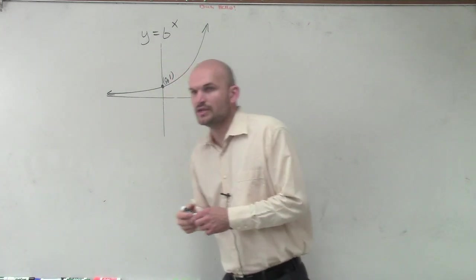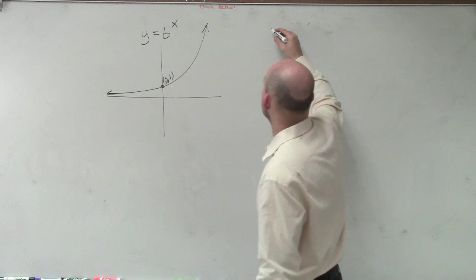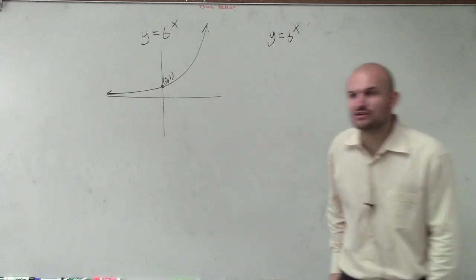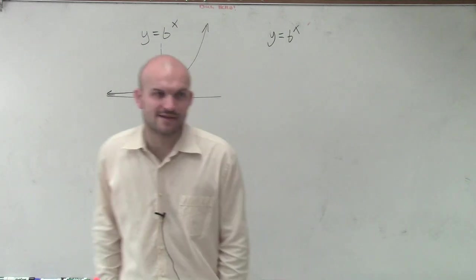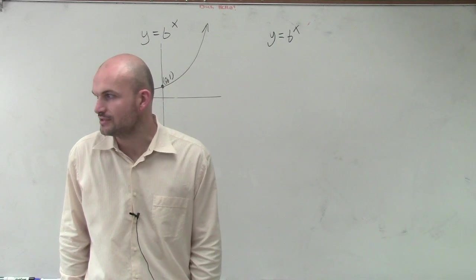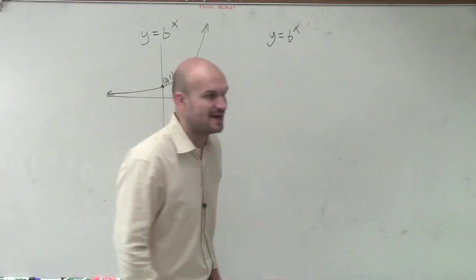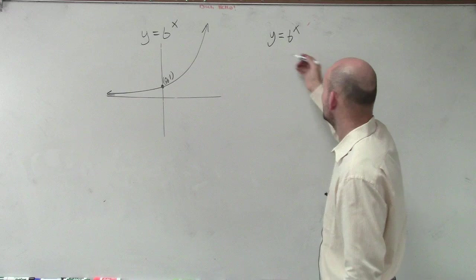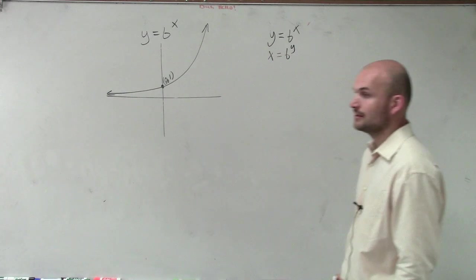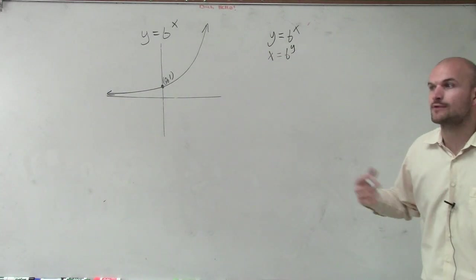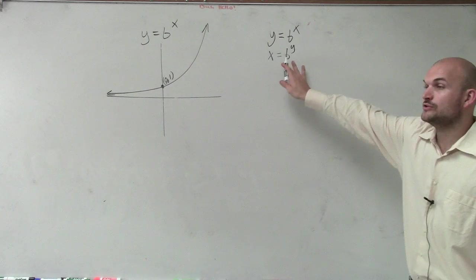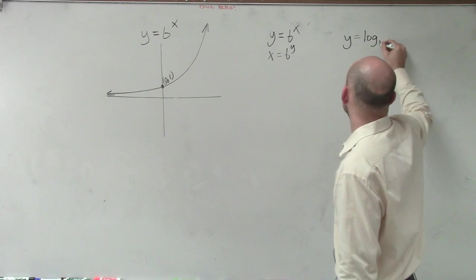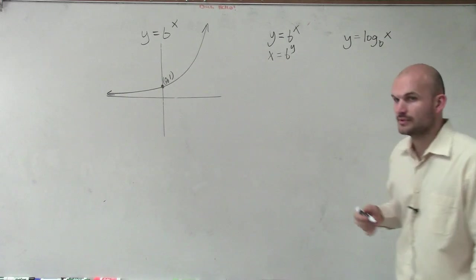So now, if you guys remember, this was y equals b to the x. Then I used inverses, right? Do you remember I used inverses to show you the logarithmic function? So if here's y to the x, I used inverses. I swapped the x and the y, right? And I said x equals b to the y. And I said, how do you solve for y? And I said, well, we solve for y by using our logarithmic function, which says y equals log base b of x. All right?